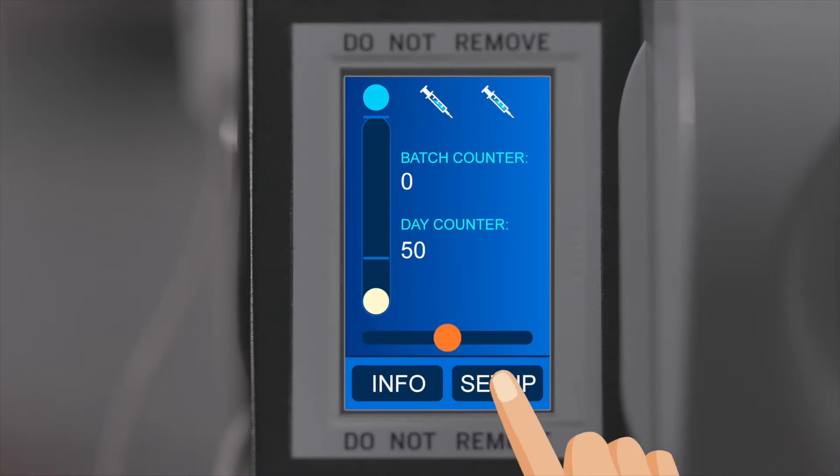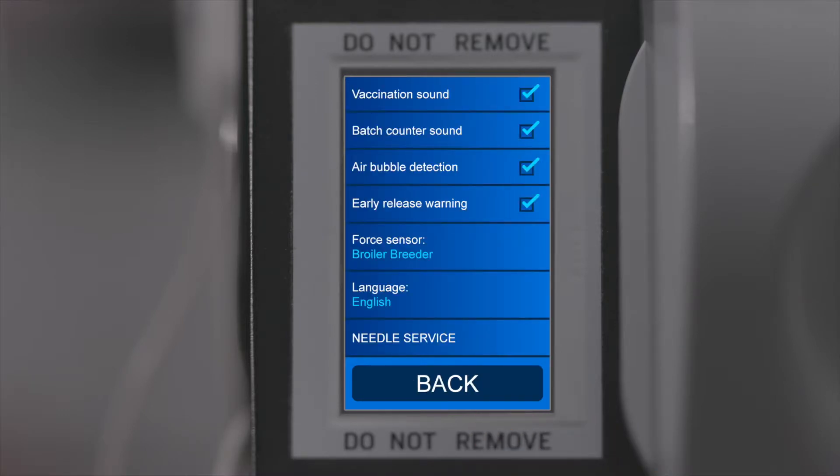Press the setup button to adjust several alarm and safety functions. Vaccination Sound: After each injection a vaccination sound indicates the proper vaccine's administration. Batch Counter Sound: Each time the batch counter reaches 0 the device provides a signal accordingly.